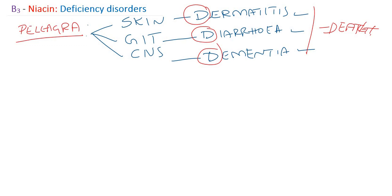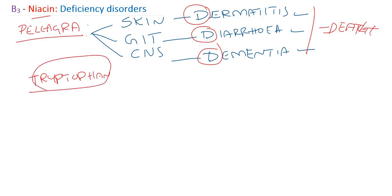We know that niacin can be synthesized in the body from tryptophan. So pellagra can occur not only from insufficient dietary niacin, but also when there is a disorder related to tryptophan metabolism — even if dietary niacin intake is adequate.